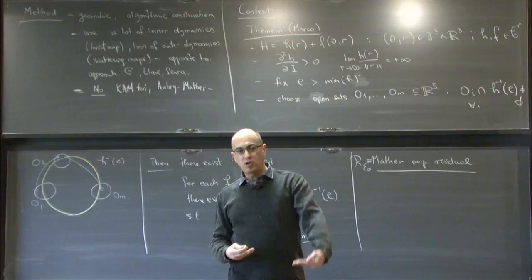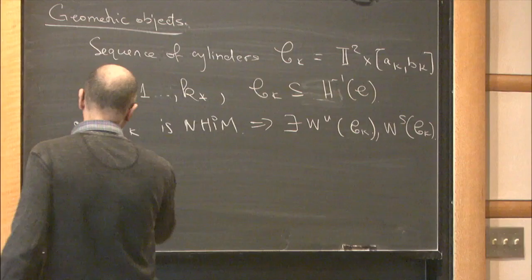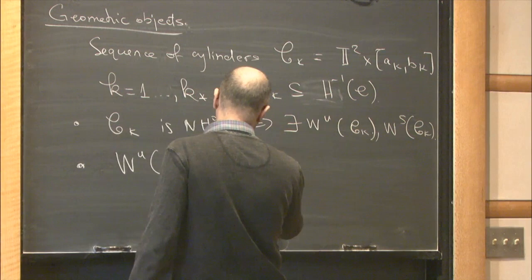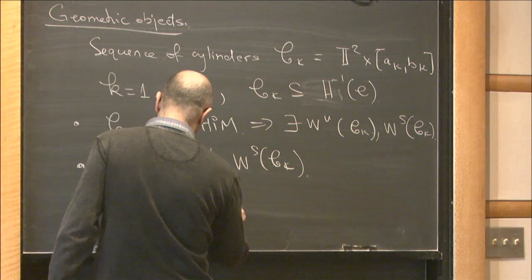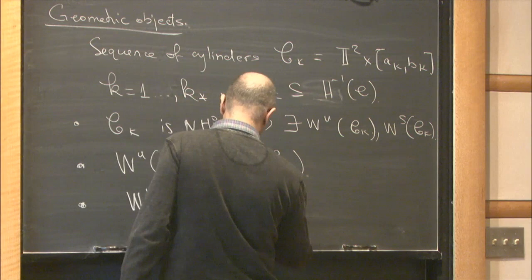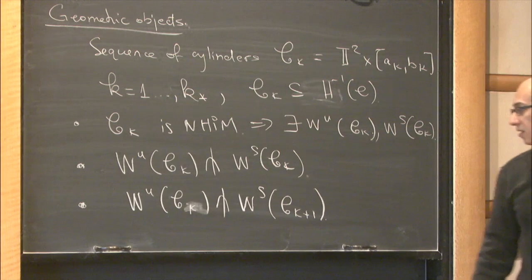For the same cylinder, you have homoclinic excursions from the cylinder to itself: the stable and unstable manifolds of each C_k intersect transversally. But you are also able to travel from one cylinder to the next via heteroclinic excursions, so the unstable manifold of C_k and the stable manifold of C_{k+1} intersect. This happens for all the cylinders in the chain.